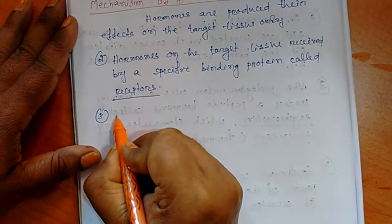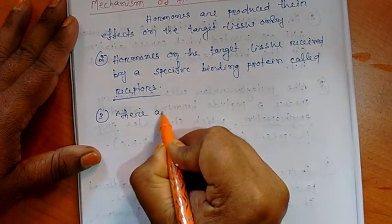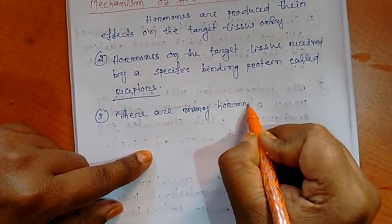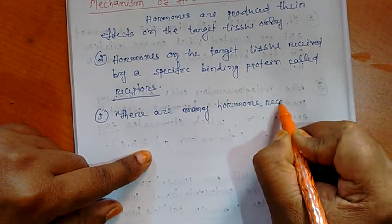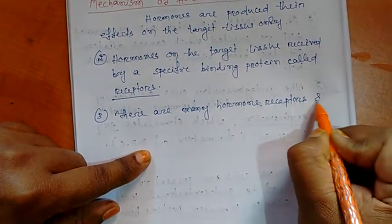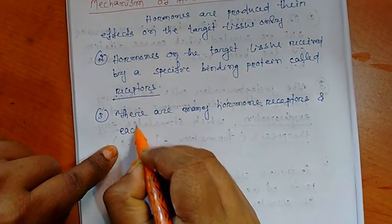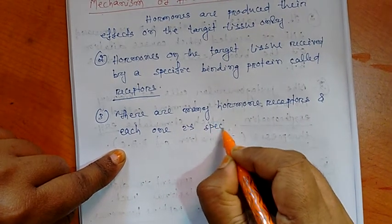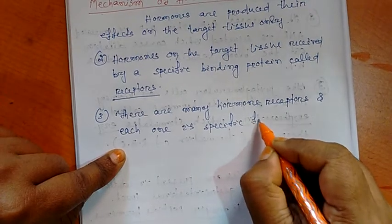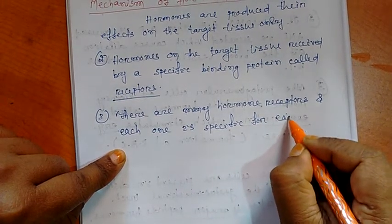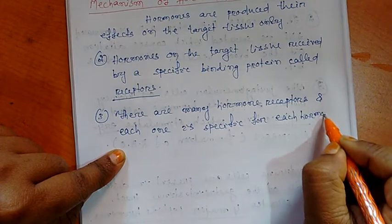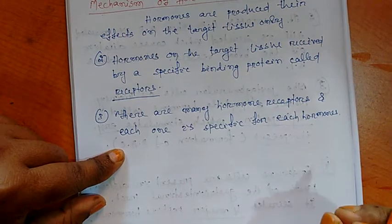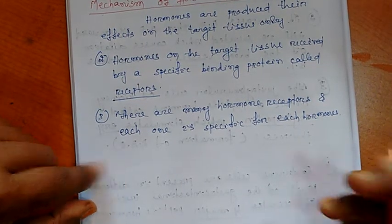There are many hormone receptors, and each one is specific for each hormone. Each receptor is different for different hormones. There is no common receptor for different types of hormones.